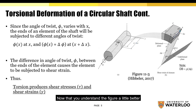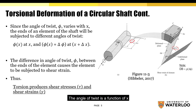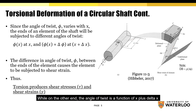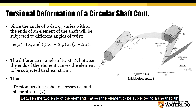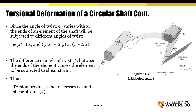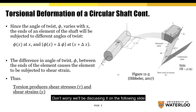Now that you understand the figure, we can move on. Since the angle of twist is a function of x, the angle phi varies depending on its location. The angle of twist is different at each end of the element: at one end it is a function of x, and at the other end it is a function of x plus delta x. The difference in the angle of twist between the two ends causes the element to be subjected to a shear strain — meaning torsion produces shear stresses and strain.